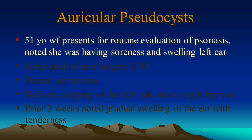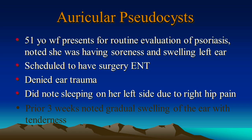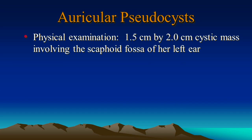A 51-year-old white female presents for routine evaluation of psoriasis. She noted she was having some soreness and swelling involving her left ear. She was scheduled to have surgery by an ear, nose, and throat doc for this ear within a few weeks. She denied any history of ear trauma. She did note sleeping on her left side due to right hip pain, and the prior three weeks she noted some gradual swelling of the ear with tenderness. On physical examination, there is a 1.5 centimeter by 2.0 centimeter cystic mass involving the scaphoid fossa of her left ear.